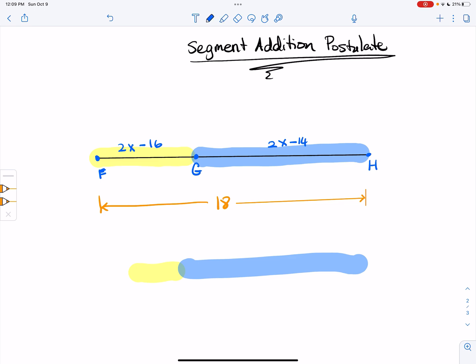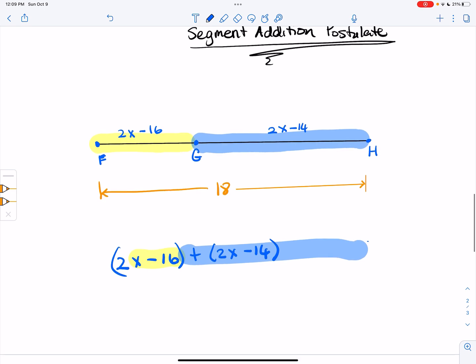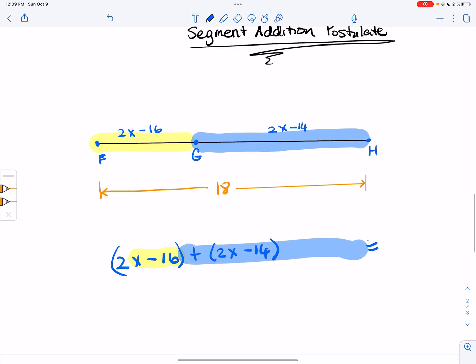So what does that mean in terms of the math that we're actually doing here? If we have 2x minus 16, that's what we have in the yellow, and then we add it to, let's put this in parentheses, 2x minus 14, we'll get the overall total. So overall that is equal to 18 units.